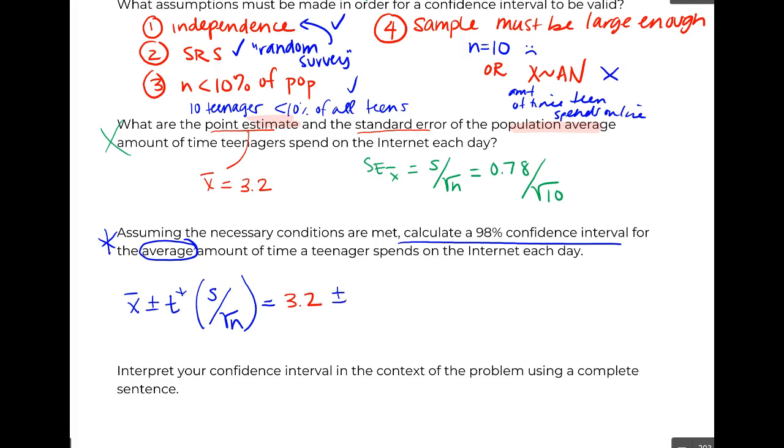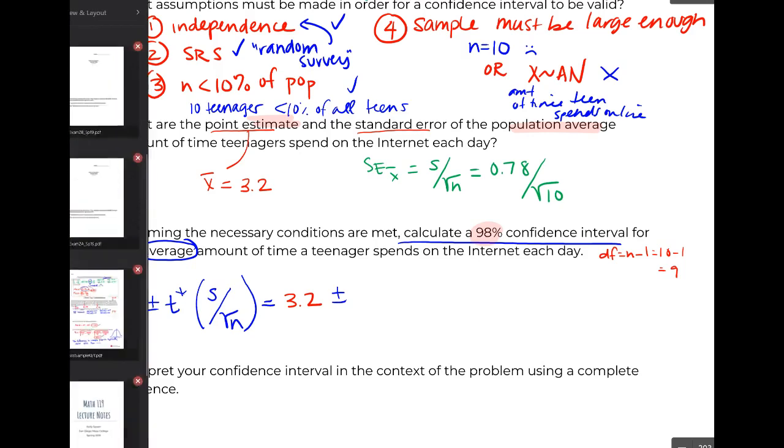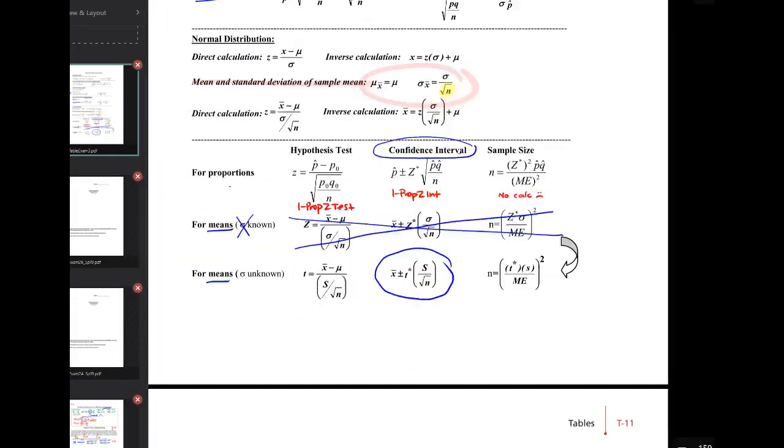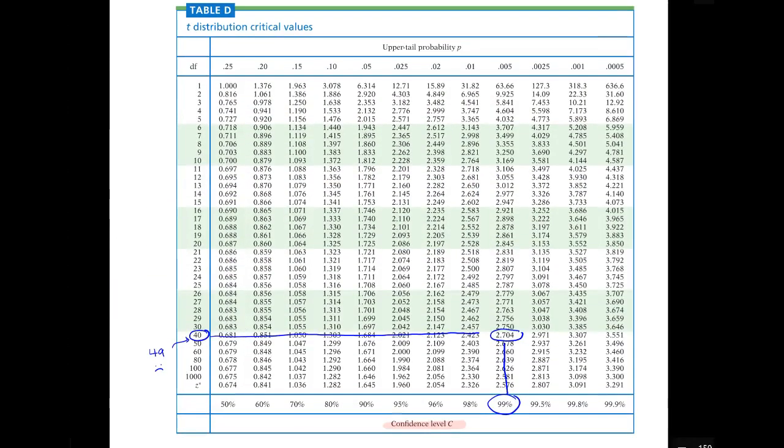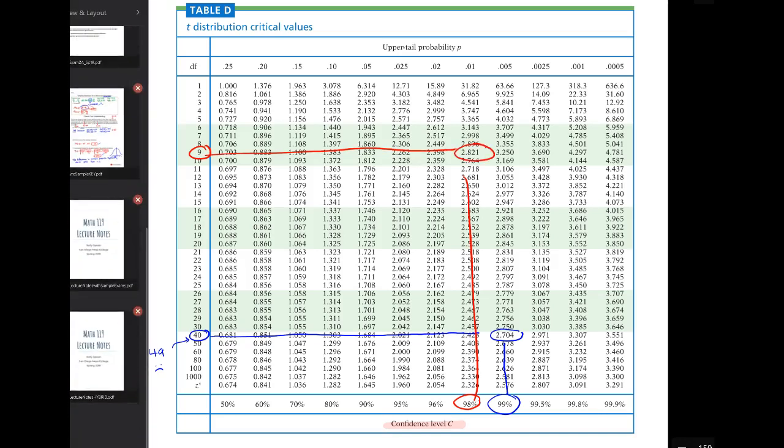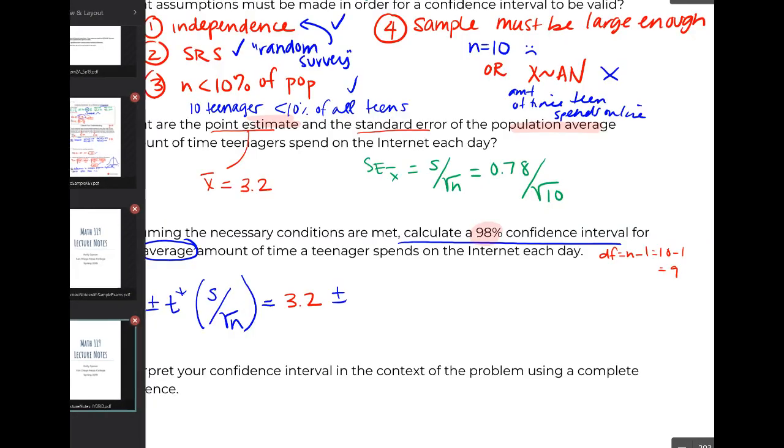Our T star, oh crap. We need to go get that. In order to get our T star, remember, we're going to need our confidence level. And we're also going to need a degree of freedom, which is our N minus one. So nine and 98. Let's go get it. Degree of freedom is nine. We want a 98% confidence interval. 2.821.